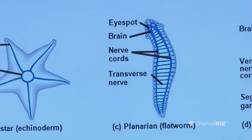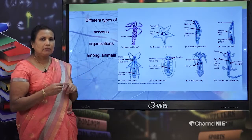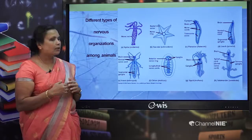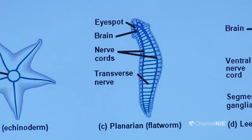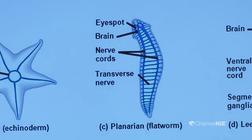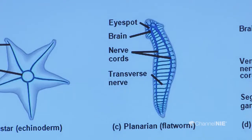Flatworms have a bilateral symmetrical, elongated body with an anterior and posterior region. The anterior region is concentrated with ganglia, and the posterior regions are connected to these ganglia by nerve cords. Nerve cords are connected to each other by transverse nerves. This is the development of the nervous system in flatworms. They also have eye spots — receptors that receive nerve supply from the ganglia.